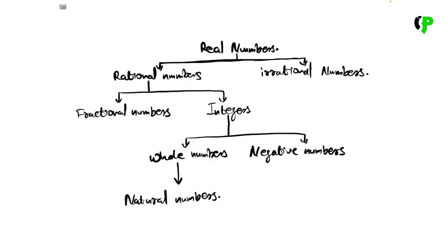We are going to go to the root of real numbers. First, natural numbers. These are natural numbers. We are going to count the numbers: 1, 2, 3, etc.